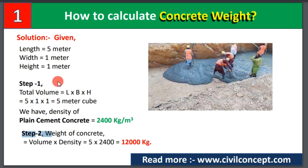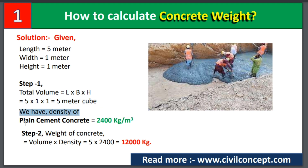In step number one, we have to calculate the total volume. The formula is: Volume = Length × Breadth × Height. So with length 5m, breadth 1m, and height 1m, the volume equals 5 cubic meters. We also need to know that the density of plain cement concrete is 2400 kg per cubic meter.